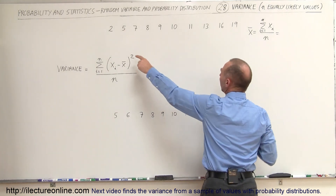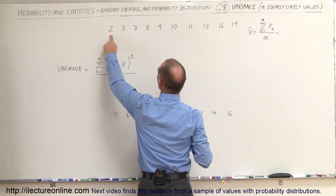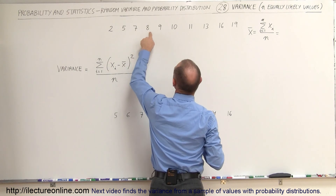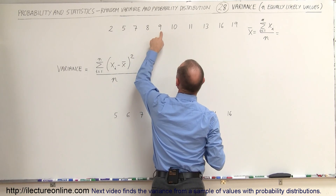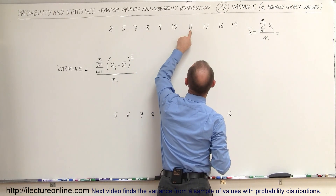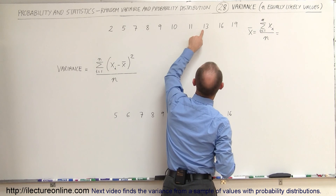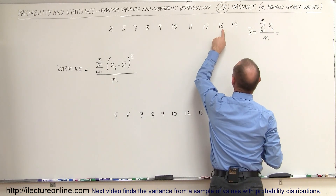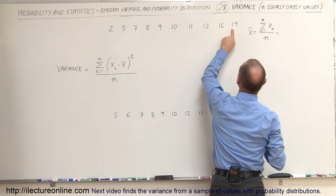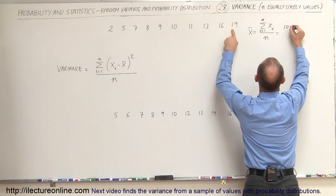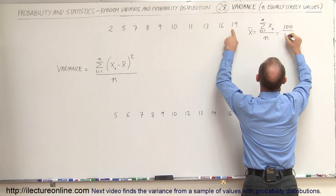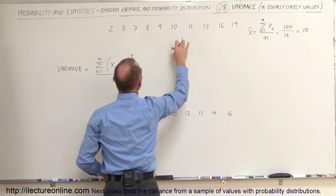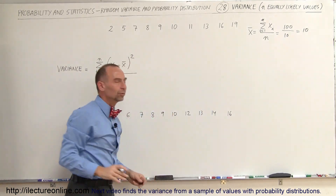Summing them up: 2 plus 5 is 7, then 14, 22, 31, 41, 51, 52, 55, 65, 75, 81, 90, 100. So that's equal to 100 divided by 10 numbers, which equals 10. The average value of those 10 numbers is equal to 10.